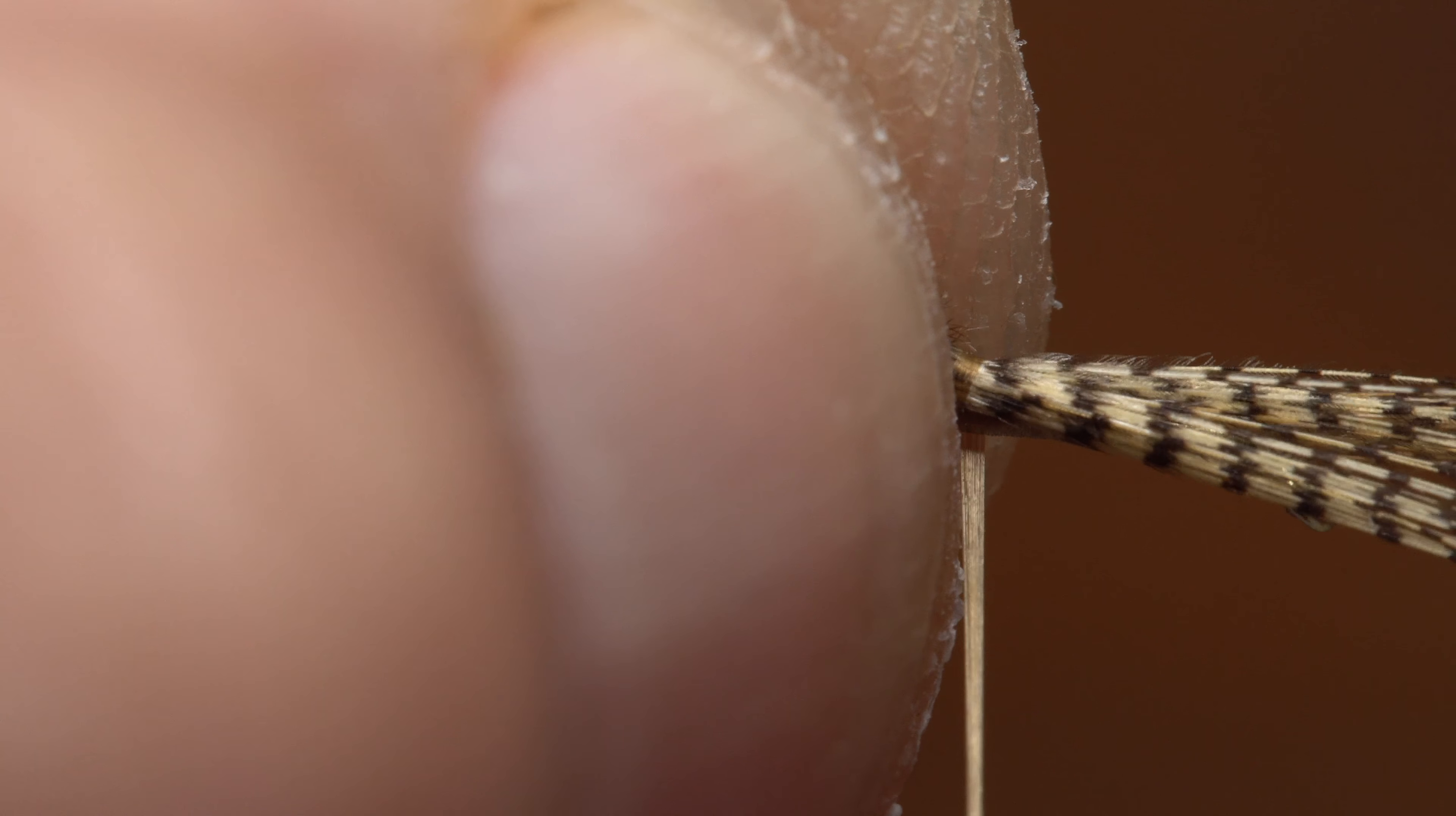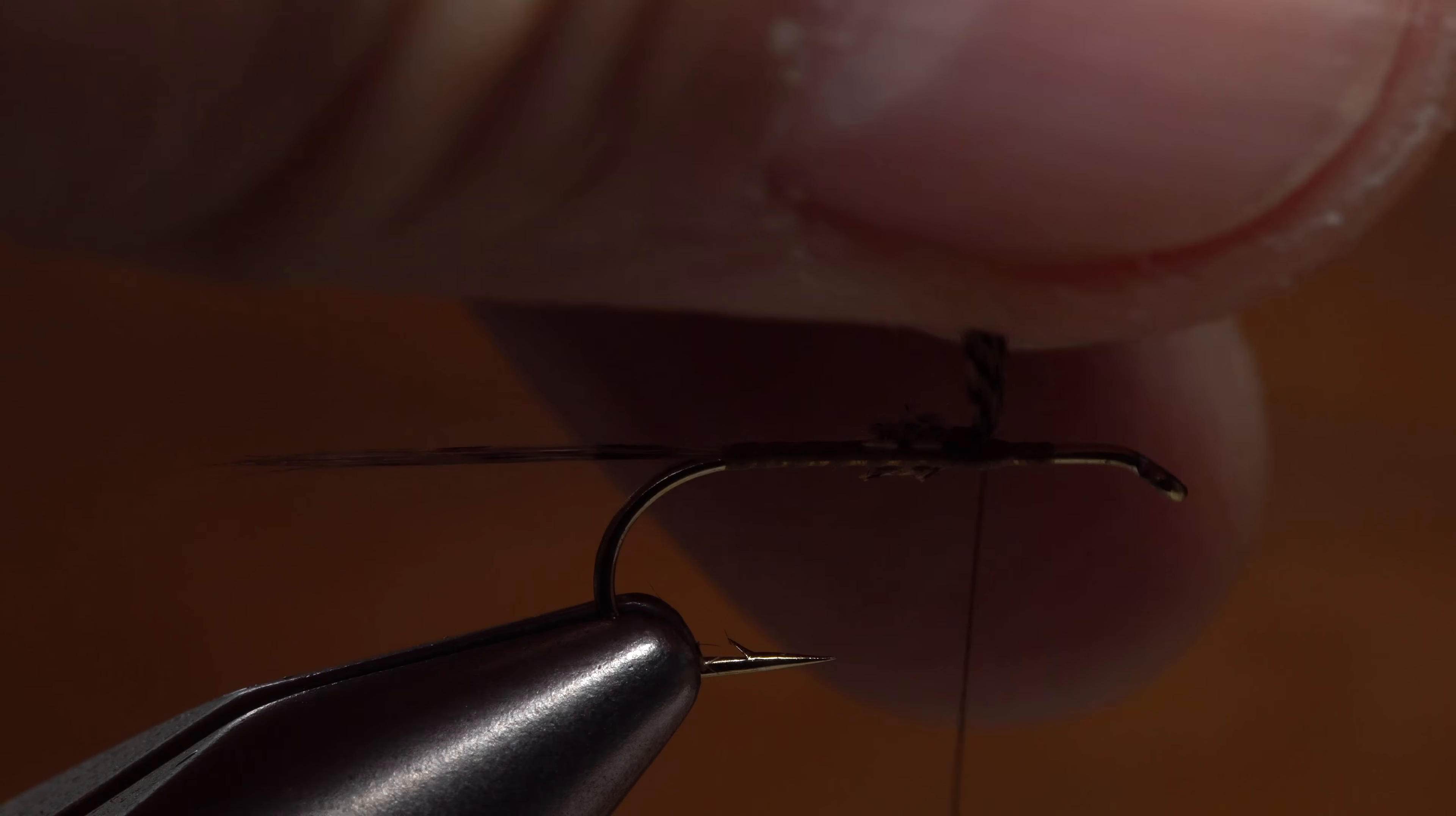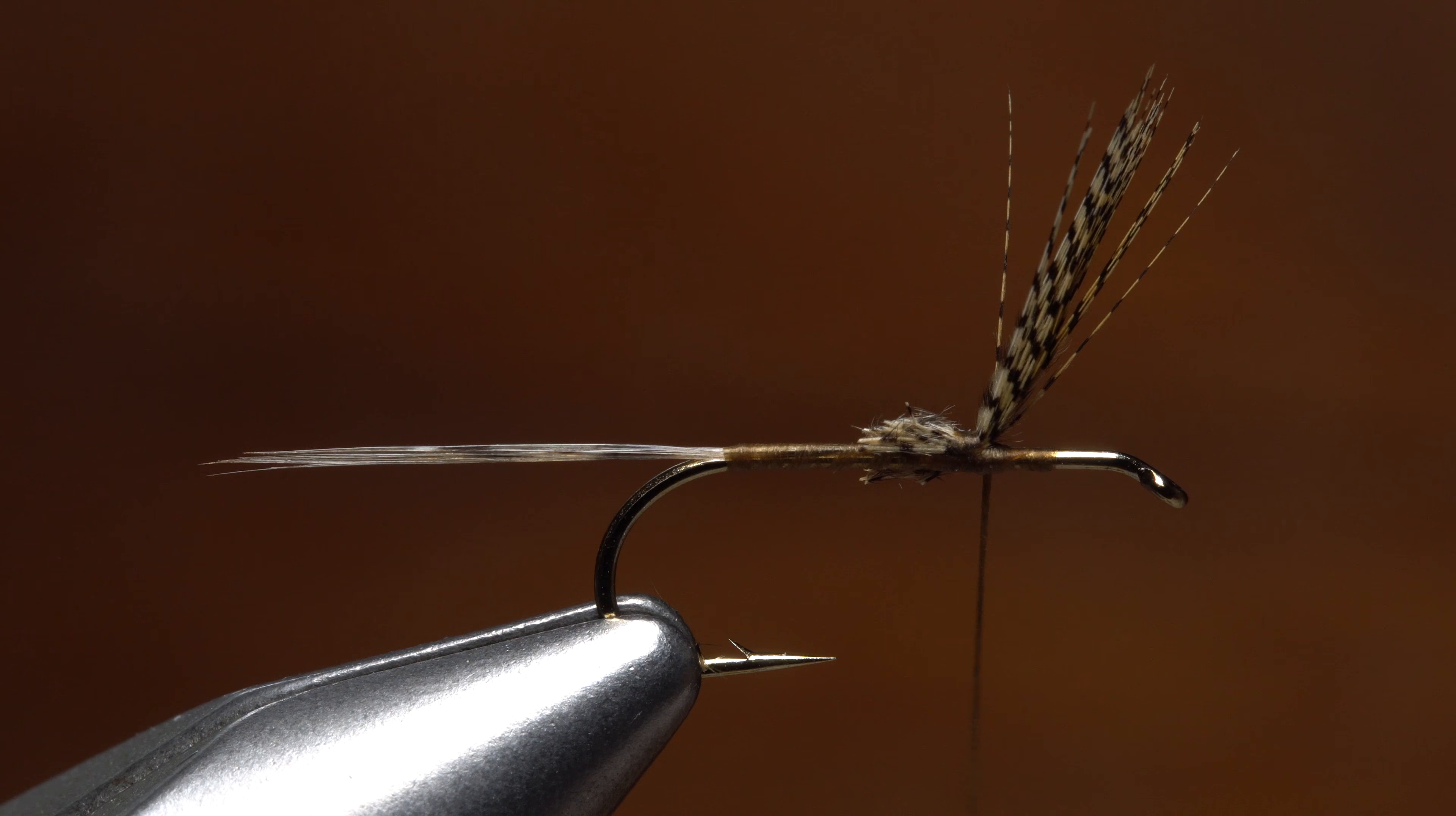There, using the edge of your thumbnail as a guide, start taking thread wraps to anchor the wing material to the top of the hook shank. This should result in an accurately placed wing that's precisely a hook shank in length.